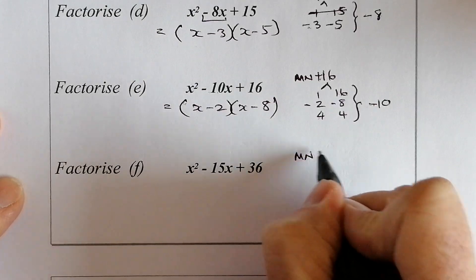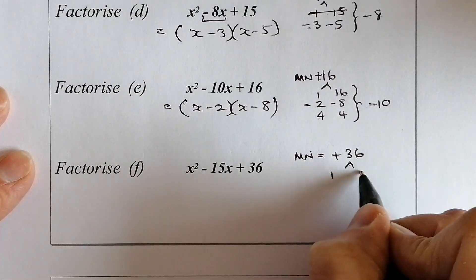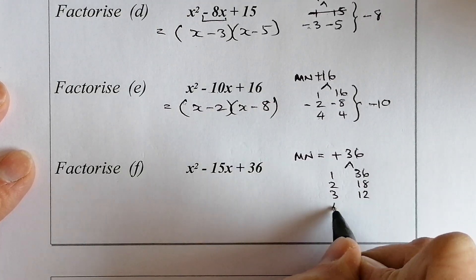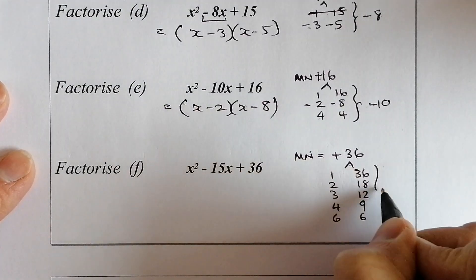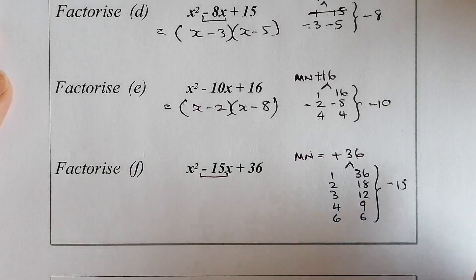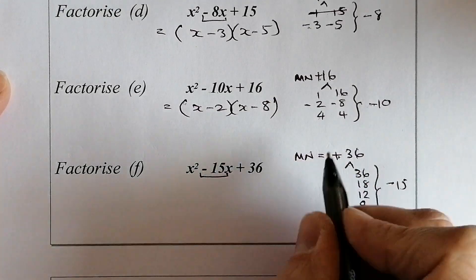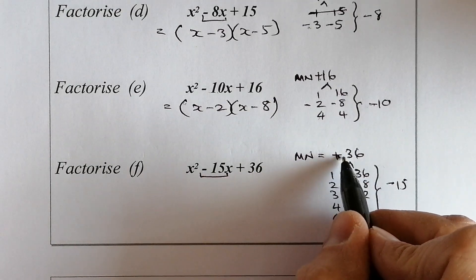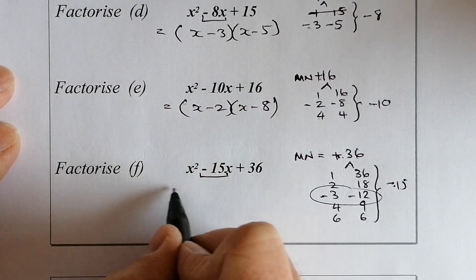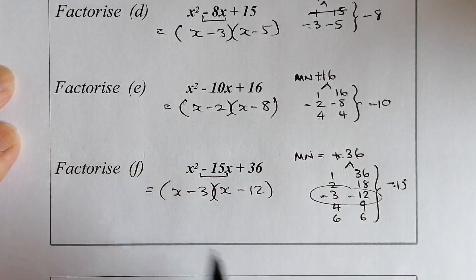Magic number is 36. Factors: 1 and 36, 2 and 18, 3 and 12, 4 and 9, 6 and 6. I need to make minus 15 — since the magic number is positive and the middle term is negative, both numbers are negative. The pair 3 and 12 gives: negative 3 and negative 12 add to minus 15. So the answer is (x − 3)(x − 12).